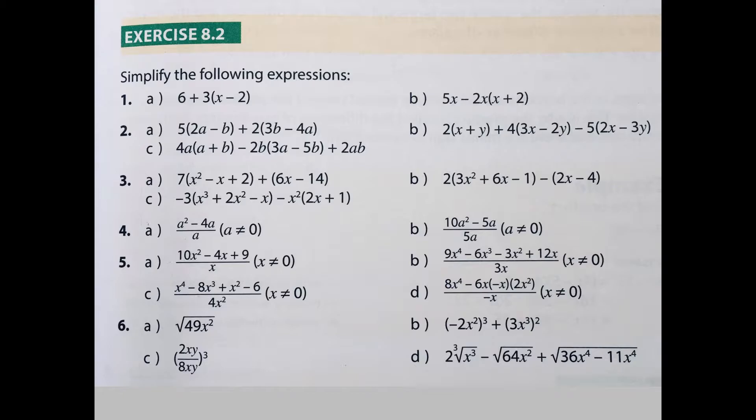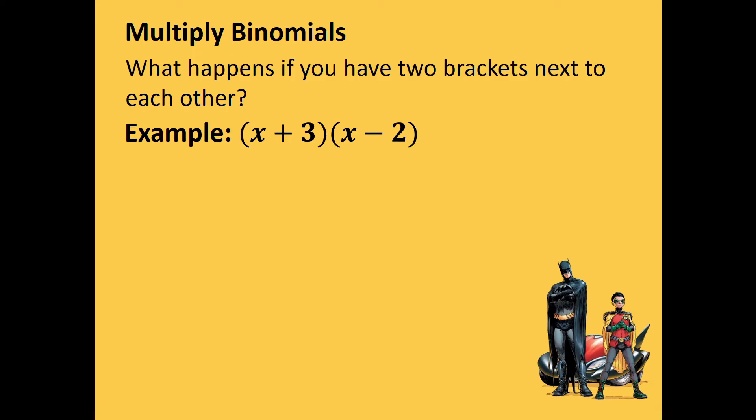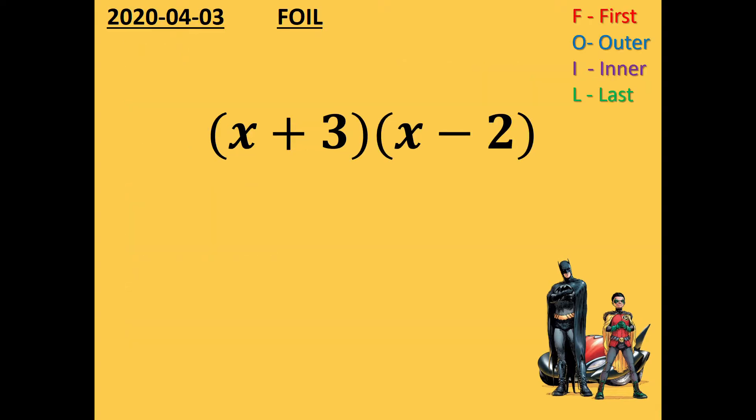Alright, so you don't need to write down anything yet. Today we're working with multiplying binomials. So basically we're working with what happens if there's two brackets next to each other, like the example that's on the screen. If you need to multiply these two brackets, you need to use a concept called FOIL. So FOIL is just a word that we use to see what we need to multiply first and second and third. Write down the date, which is the 3rd of April, and the heading, which is FOIL, and you can write down the example.